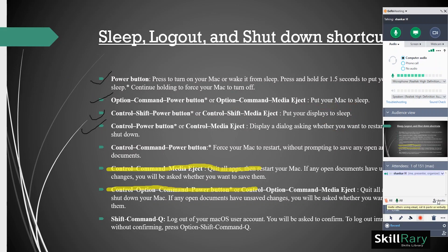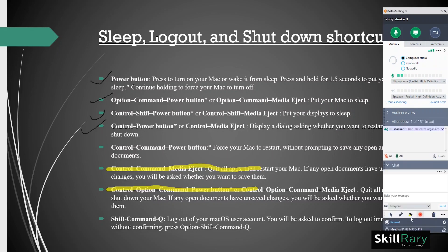In the Attendees section of your GoToMeeting taskbar, you can see all of your viewers who have joined the meeting. In this case, it is just one. Below this section, you have an option to chat in the group. You can choose with whom you want to chat as well. Here, I will choose everyone and type my message. You can see the message I just sent.